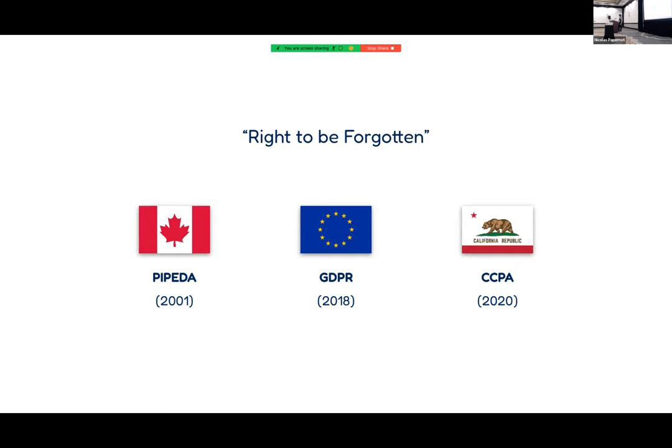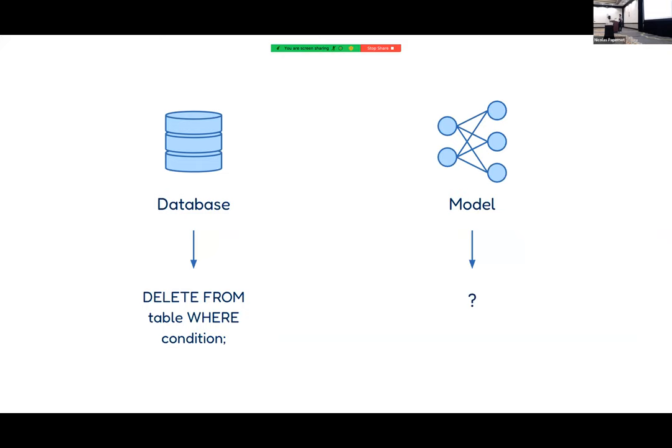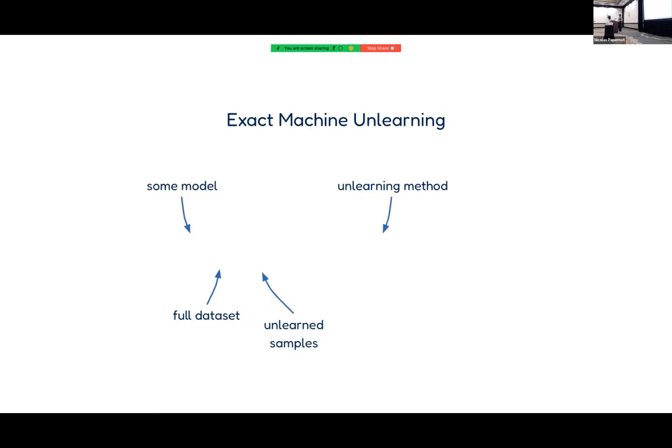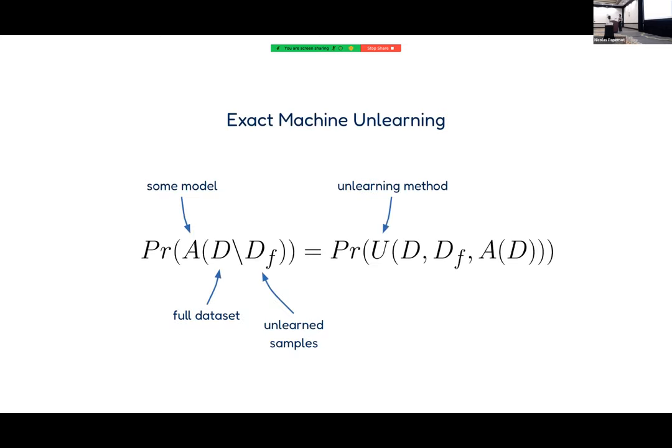Deleting someone's personal data is really easy if you just have a database — you select the row, delete it, and you're done. But it's a bit more difficult when you're talking about machine learning models, and this is where machine unlearning comes in.